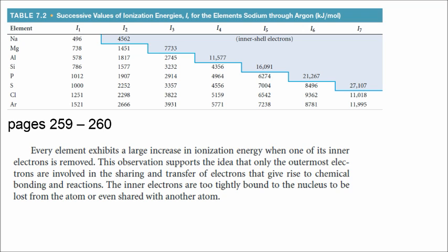Referring to table 7.2 in your book, which covers successive ionization energies for various elements: the blue section refers to inner shell electrons. For sodium, there's a big jump between the 1st and 2nd ionization energies. For magnesium, there's a large increase between the 2nd and 3rd — just like our question. For aluminum, the large increase is between the 3rd and 4th. Every element experiences a large jump when an inner electron is removed.